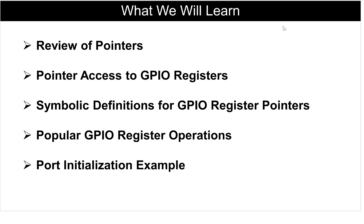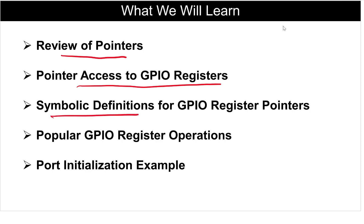Up to now, we have seen GPIO ports, how we can reconfigure them as regular I/O or alternate functions, and which GPIO registers we use for configuration. Now we will see how we can access the GPIO registers and modify them. First, we will start with a review of pointers and then how we can use these pointers for accessing GPIO registers. Then we will look at symbolic definitions and some popular register operations. Finally, we will write a port initialization example in C. Now let's briefly review pointers.